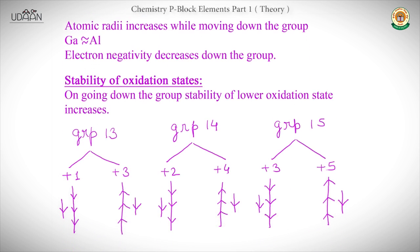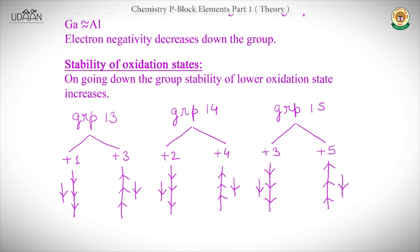Now we move to the stability of oxidation states. On moving down the group, the stability of the lower oxidation state increases. In group 13, the oxidation states are +1 and +3. The lower oxidation state is +1. As we go down the group, its stability increases, while the stability of the higher oxidation state, +3, decreases.